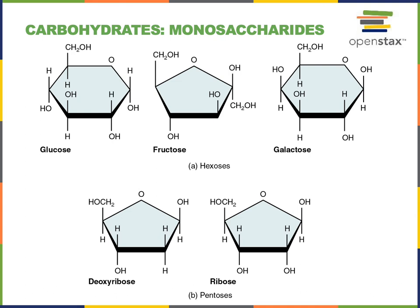Deoxyribose and ribose are five-carbon monosaccharides, in contrast to glucose, fructose, and galactose, which are six-carbon monosaccharides. Collectively, the six-carbon monosaccharides are called hexoses, and the five-carbon monosaccharides are known as pentoses. Deoxyribose and ribose are important because they form a portion of the nucleotide structure. The nucleotides used to make DNA contain deoxyribose, and the nucleotides used to make RNA contain ribose.